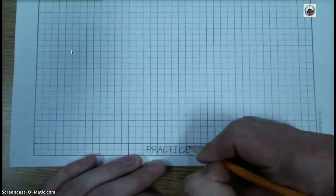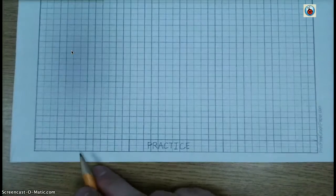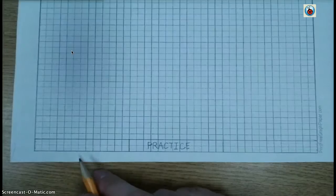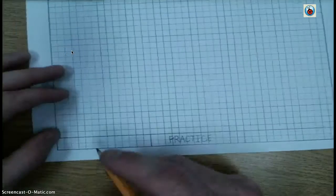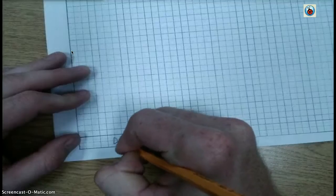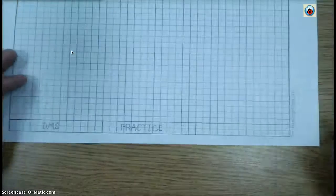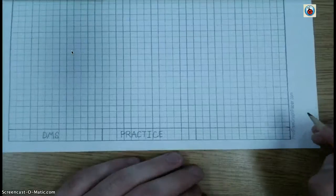I named it "Practice." The left title block would be your company name. We're just going to go with "DMS"—all caps, quarter-inch letters, touch the top and bottom construction lines. DMS.